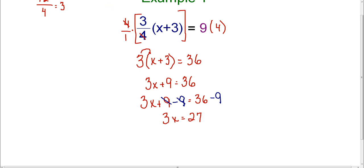Now I have 3x equals 27, and I know that I just need to divide by 3 on both sides of the equation, and I end up with x equals 9.